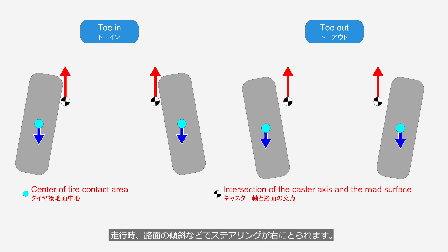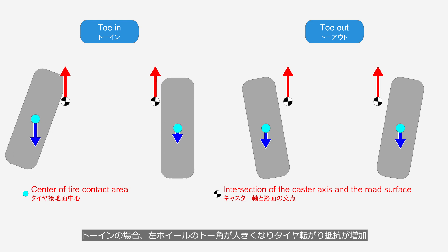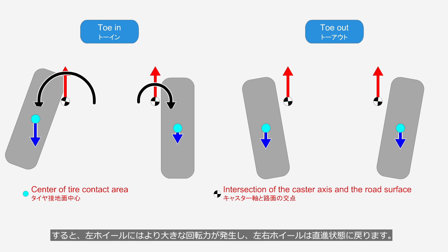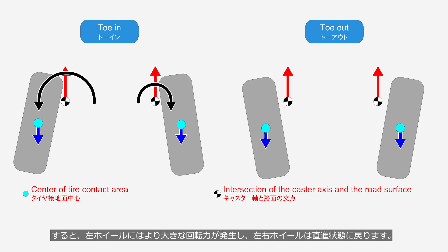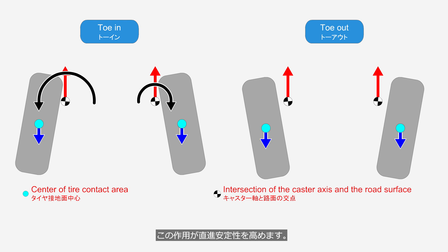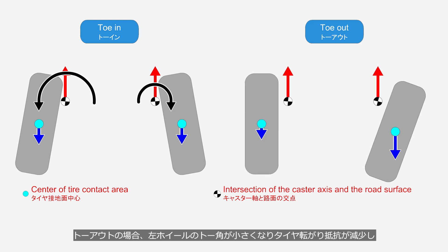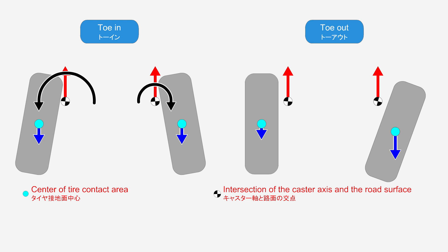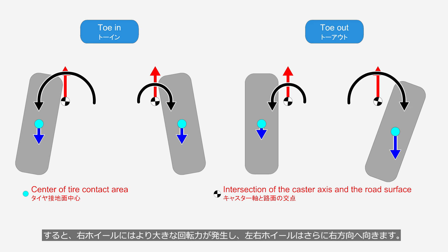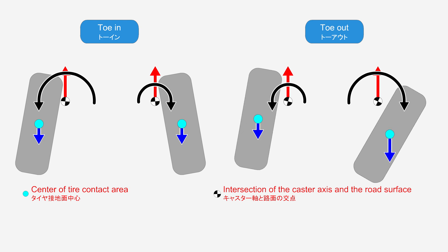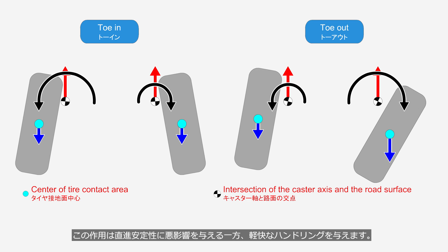While driving, the steering may pull to the right due to the road's incline and other factors. In the case of toe-in, the toe angle of the left wheel increases, causing rolling resistance to rise, while the toe angle of the right wheel decreases, reducing rolling resistance. As a result, a greater rotational force is generated on the left wheel and both wheels return to a straight-ahead position, enhancing straight-line stability. In the case of toe-out, the toe angle of the left wheel decreases while the right wheel's increases, generating greater rotational force on the right wheel and turning both wheels further to the right — adversely affecting straight-line stability while providing nimble handling.